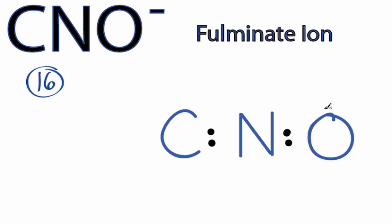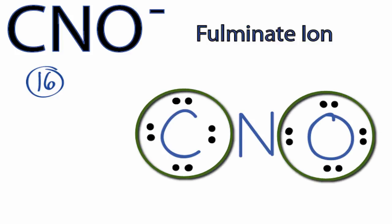Then we'll go around the outside, and we've used four valence electrons so far. 6, 8, 10, 12, 14, 16, and we've used all the valence electrons we have. You can see that both the carbon and the oxygen have an octet. They have eight valence electrons, but the central nitrogen only has four valence electrons.